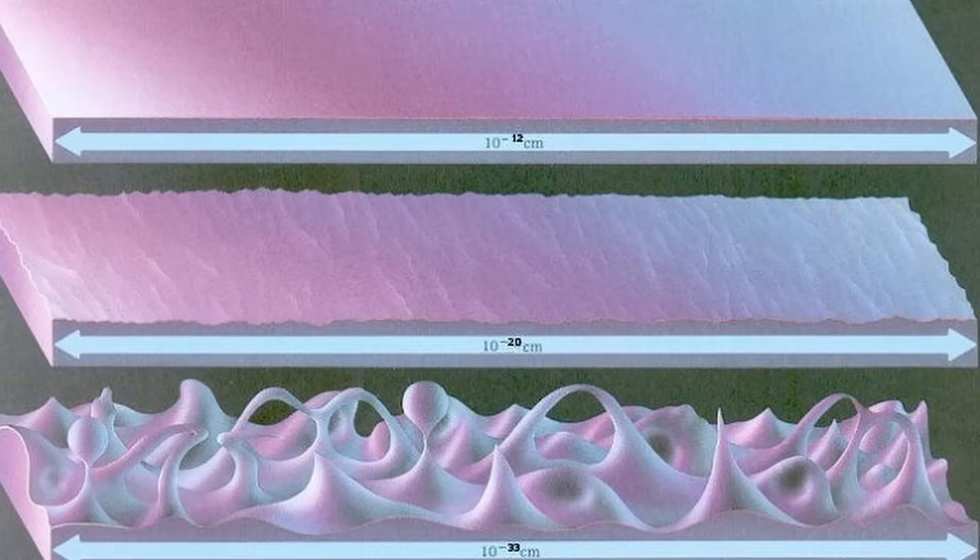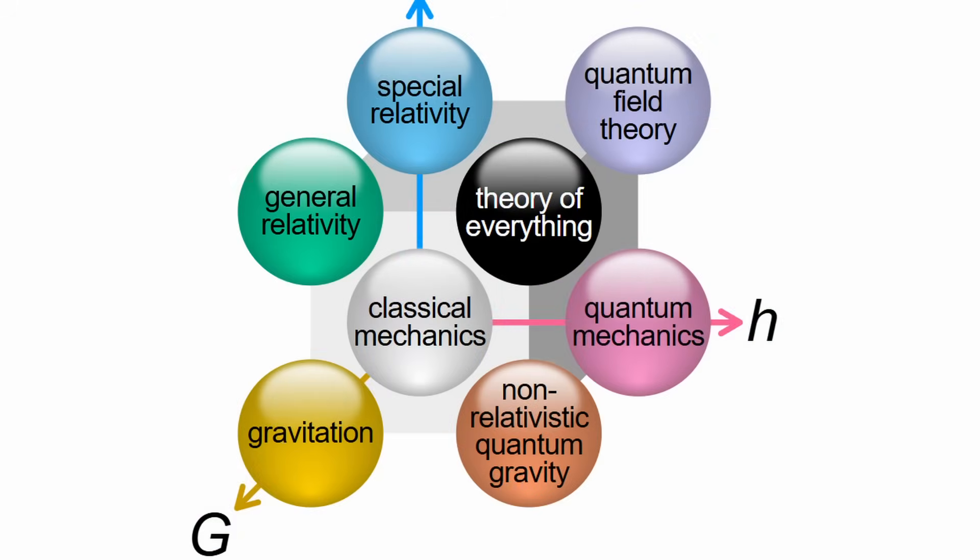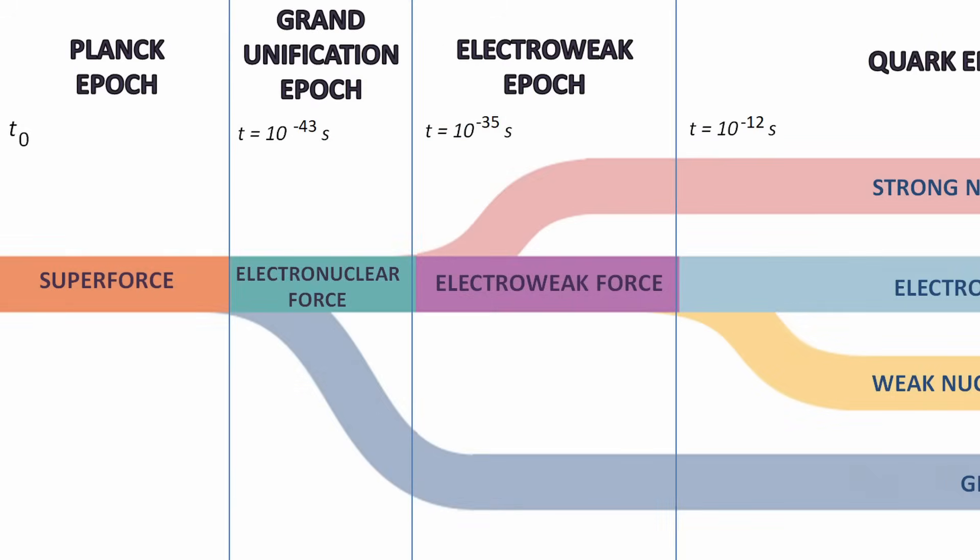The Planck era was a time and place so short and with conditions so extreme that our current knowledge of physics cannot describe what occurred. Physicists currently seek out a theory of quantum gravity in order to accurately describe the state of the universe during this era. However, scientists do think that gravity, the strong and weak nuclear force, and electromagnetism were unified due to the exceedingly high temperatures present just after the Big Bang.